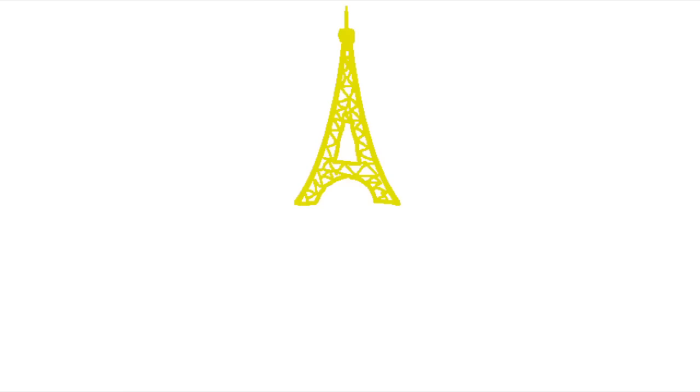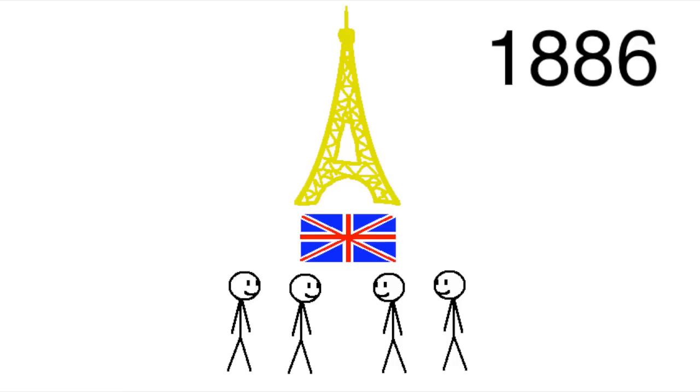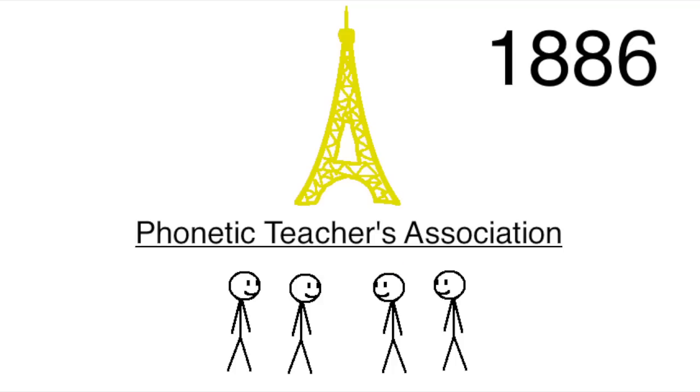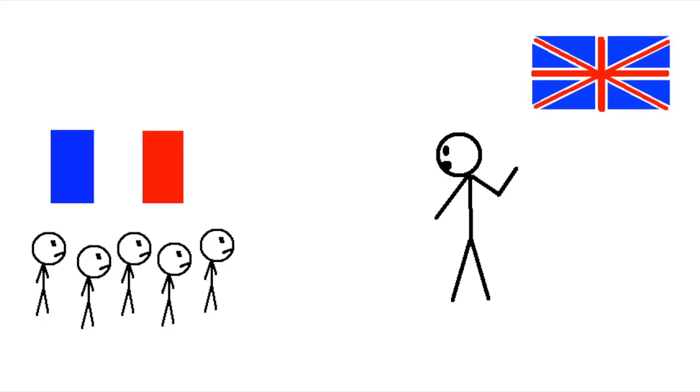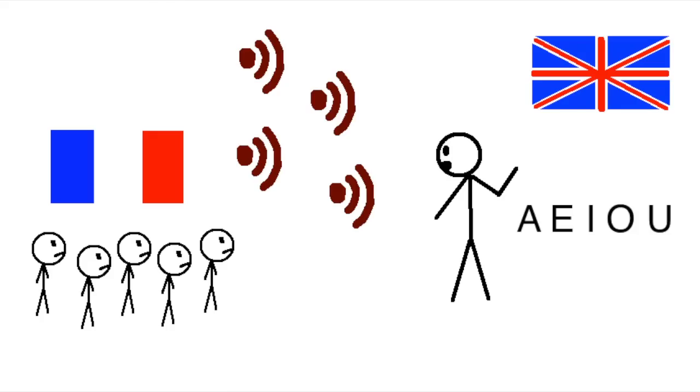The whole thing started back in Paris in 1886 with a small group of English teachers who called themselves the Phonetic Teachers Association. They were mostly concerned with the fact that English and French both had a lot of really weird spelling rules, so when you were trying to teach English to French kids, you had to simultaneously teach them a bunch of new sounds and ways of pronouncing things, and a bunch of new spelling conventions.